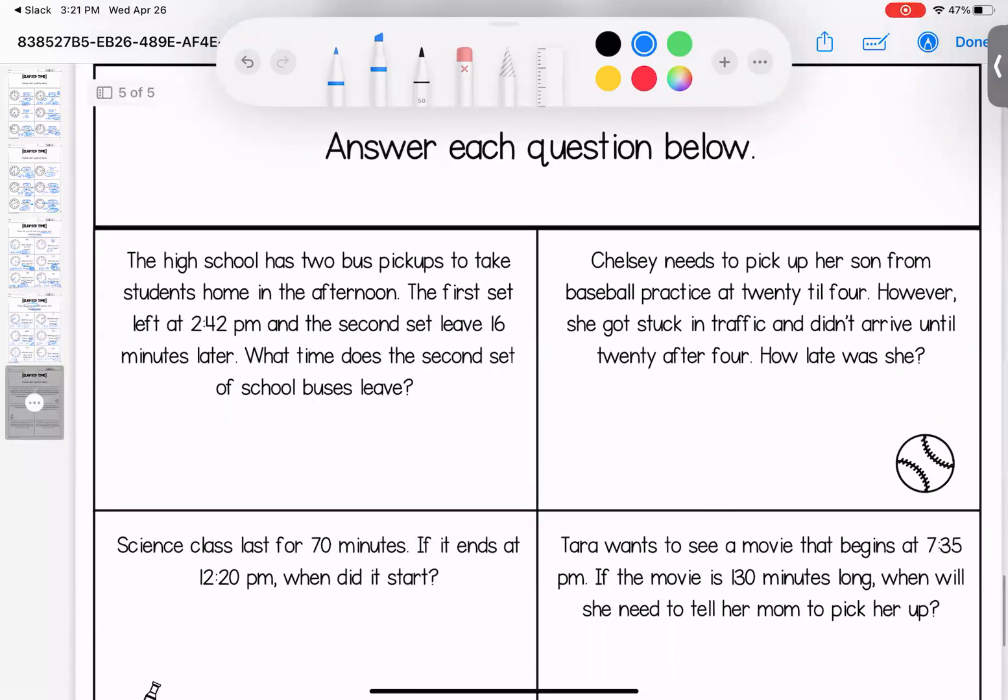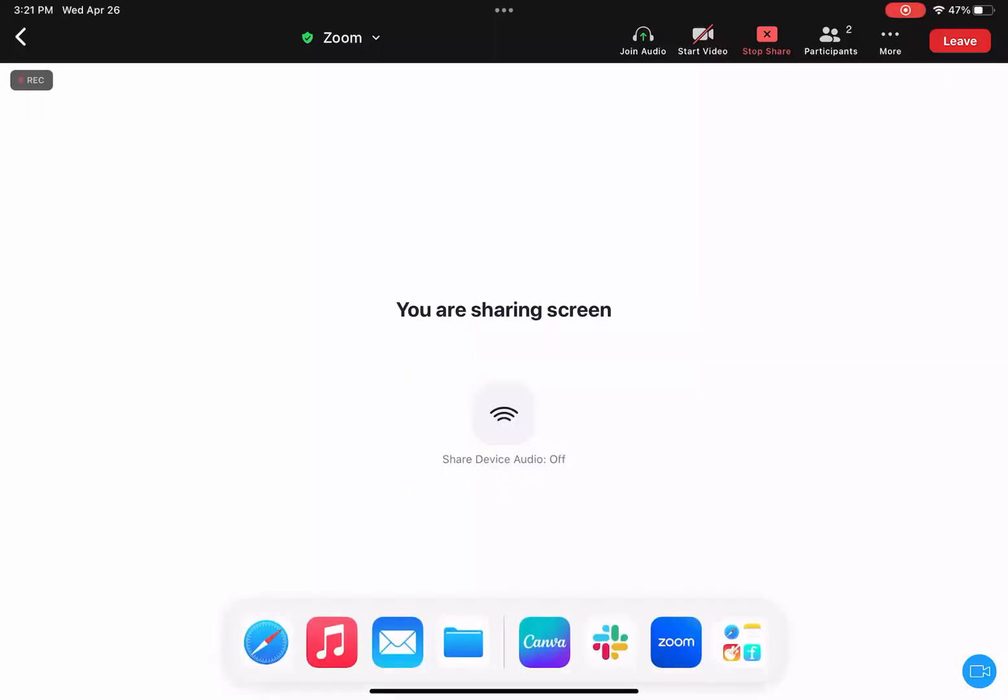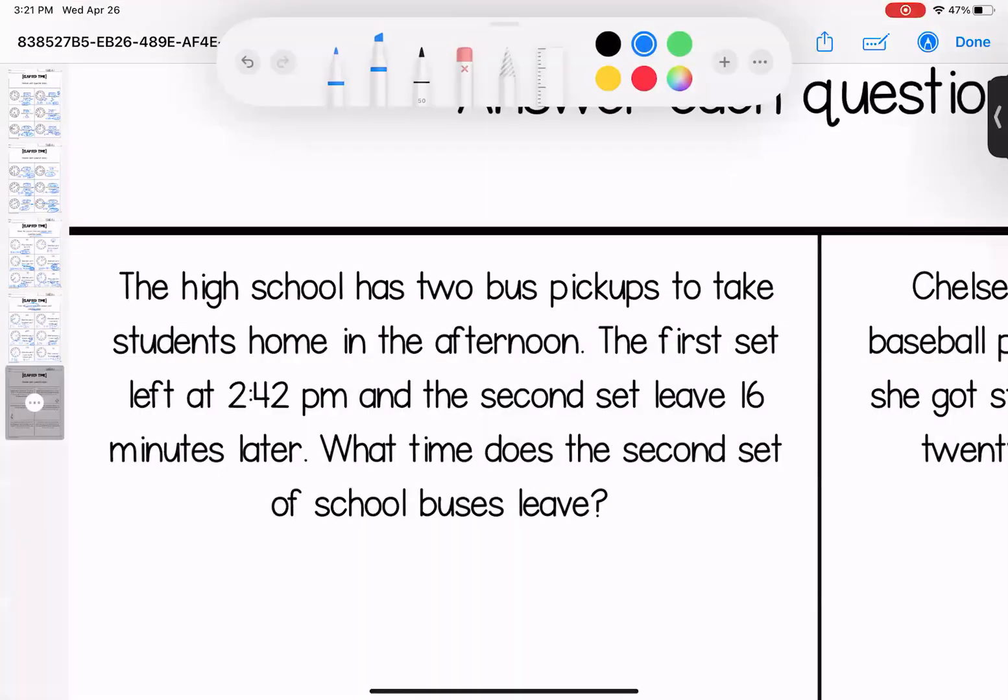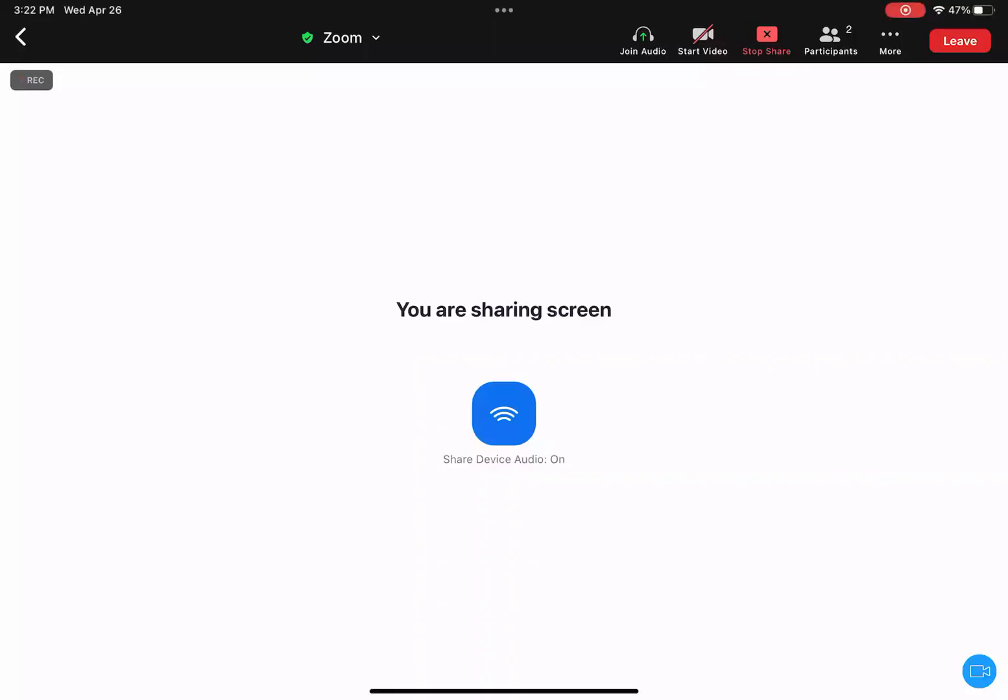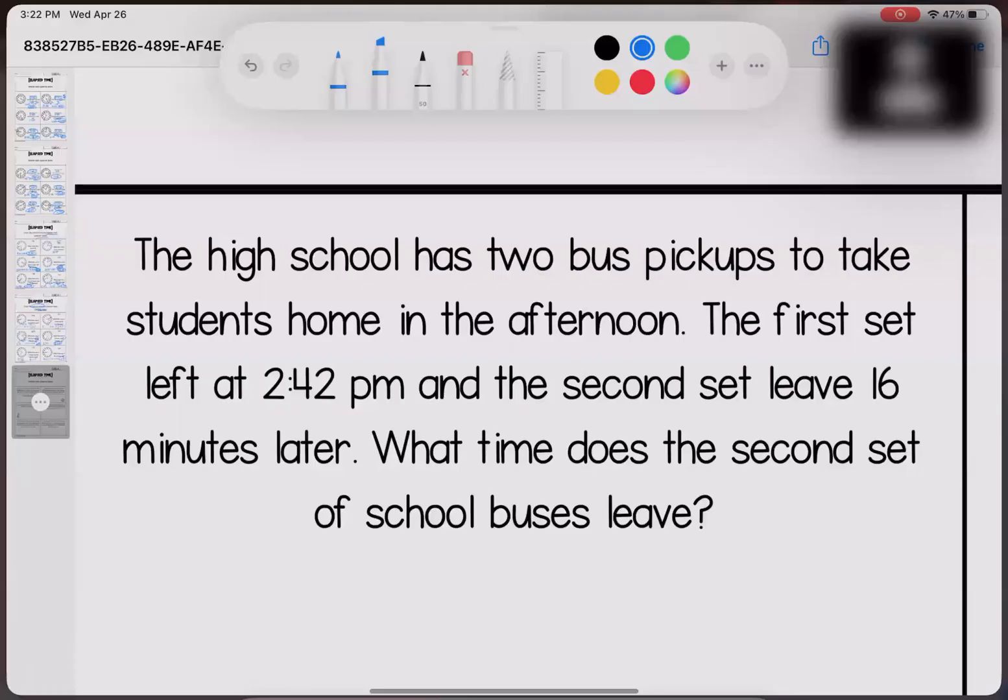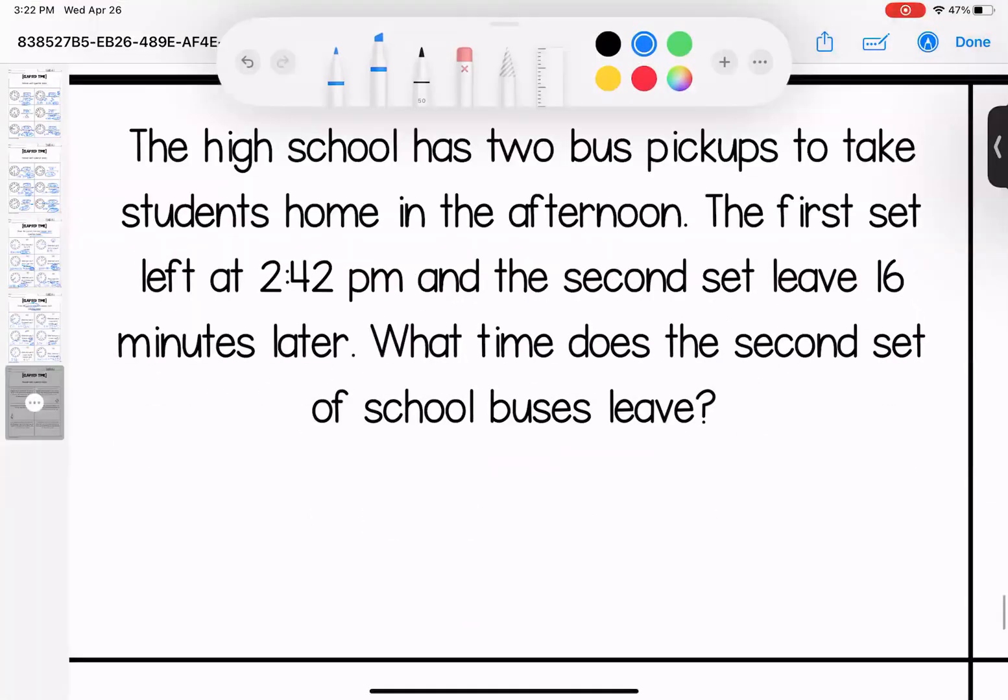All right loves, last page, we're looking at word problems. The high school has two bus pickups to take students home in the afternoon. The first set left at 2:42 and the second set leaves 16 minutes later. What time does the second set of school buses leave? So we have 2:42, we need to add 16. That gives us 2:58 PM.